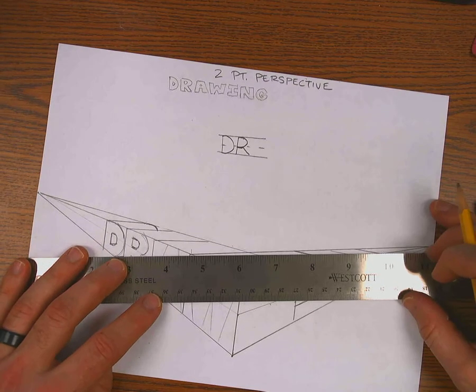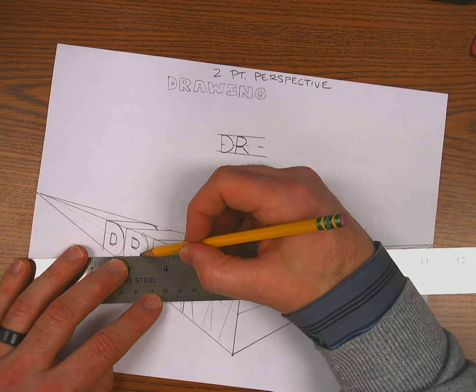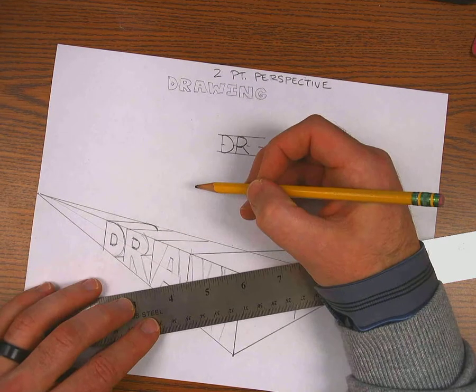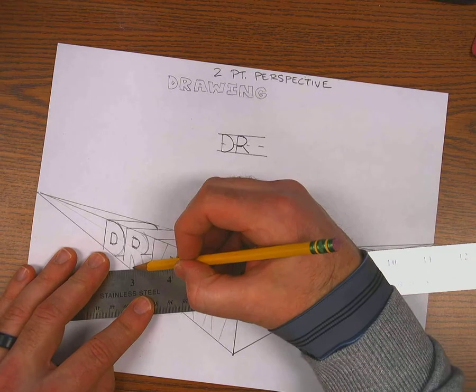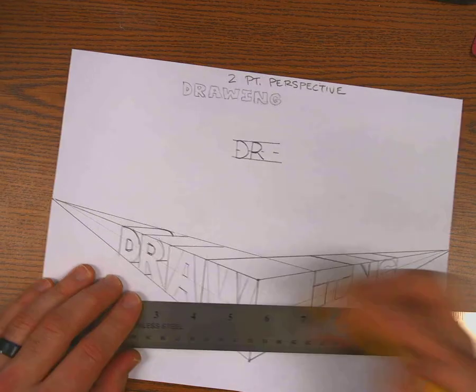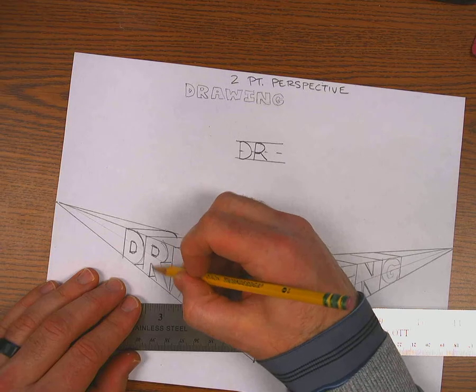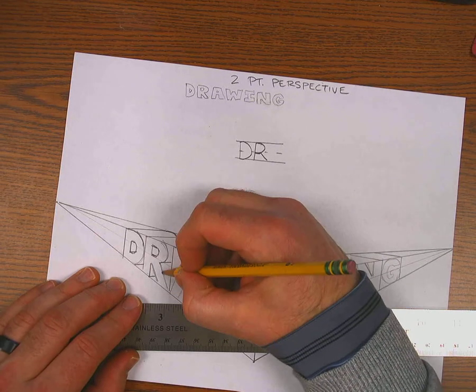Now I'll do the R. There's a little corner right there. I'm looking for all the corners where I would see a line. I'm going to draw the line.